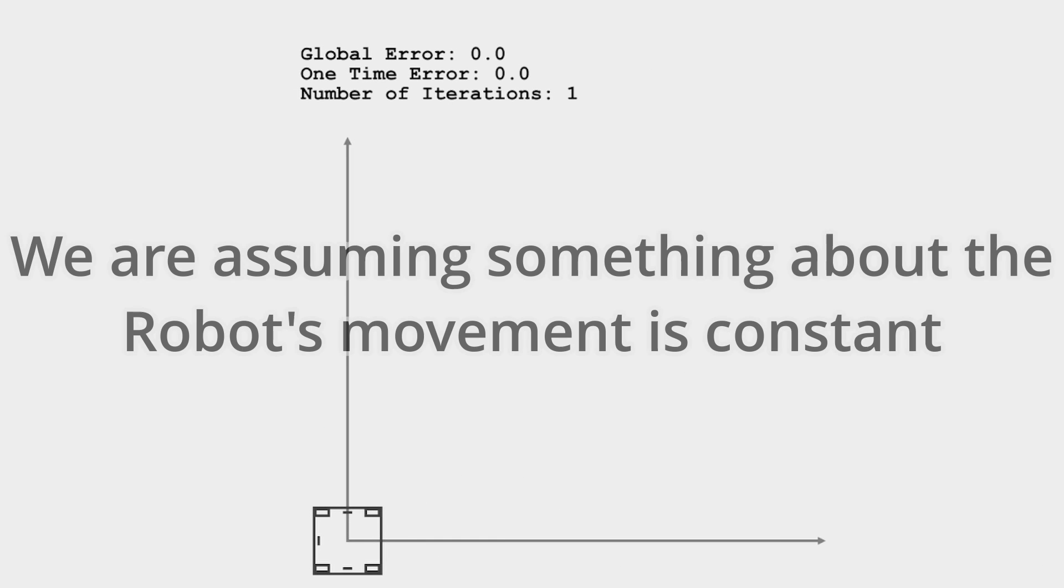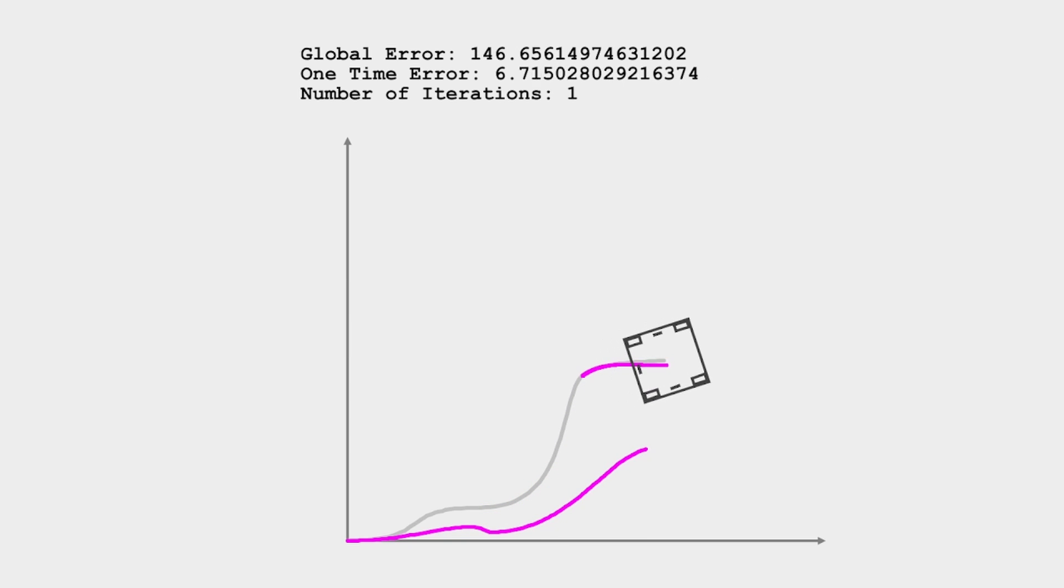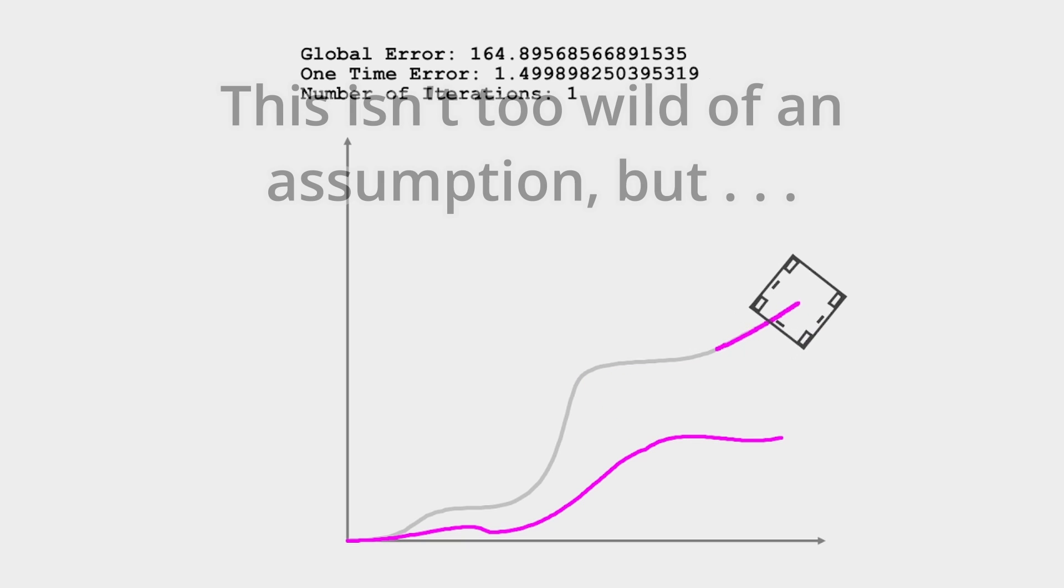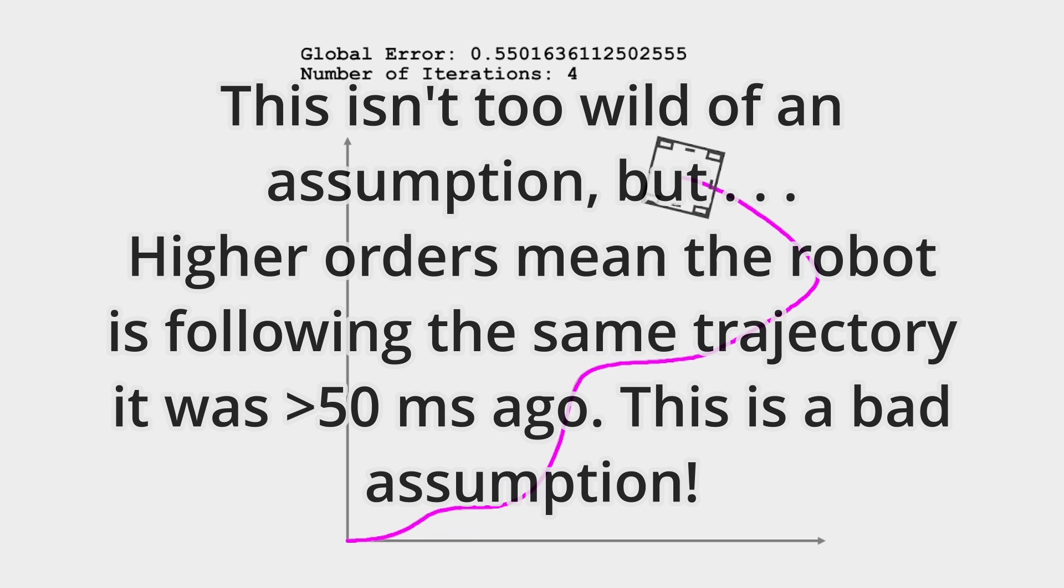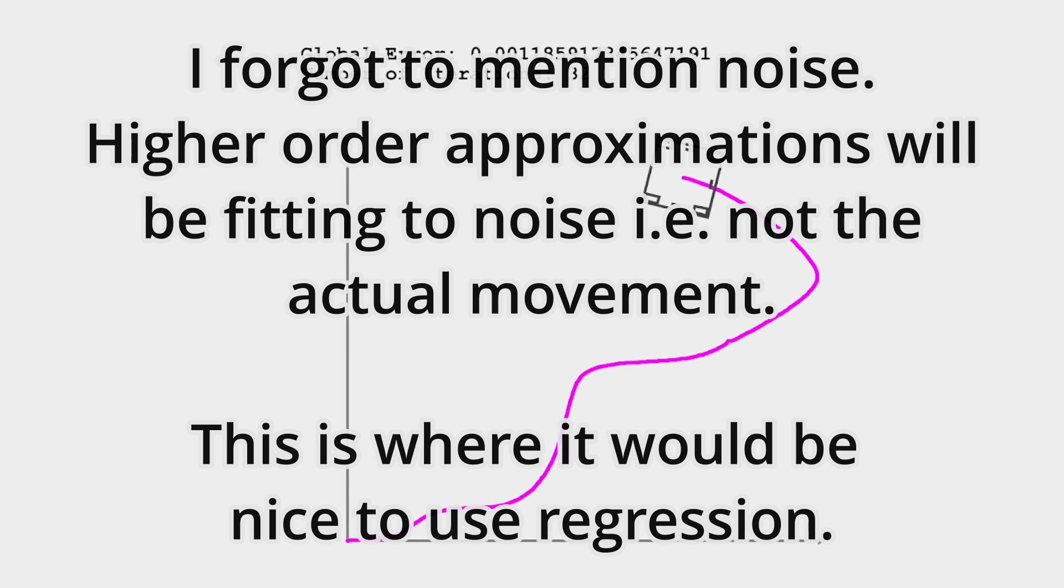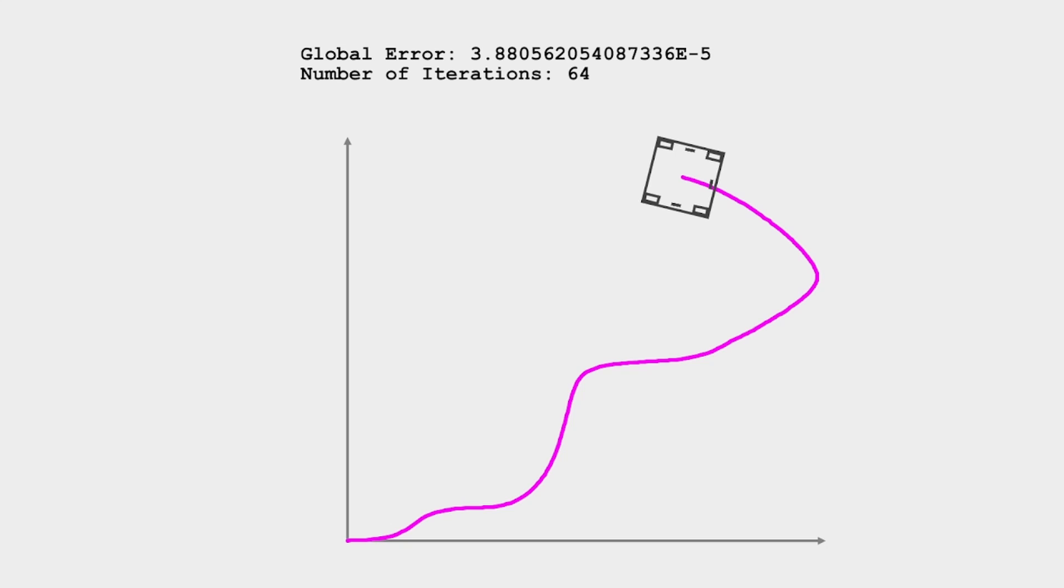Secondly, the assumption we are making is that over these n plus one different loops, the value of our n order coefficient is constant. So for example, if we are doing constant jerk, the third derivative of position, we would be assuming that over the past four loops, our jerk was the same value. You can probably guess that as the number becomes larger, it becomes less and less true. Because of these reasons, I cannot recommend going higher than a constant jerk localizer. With that aside, we have successfully solved odometry.